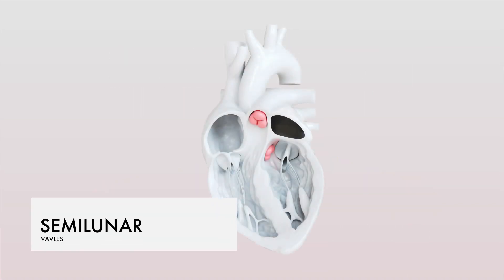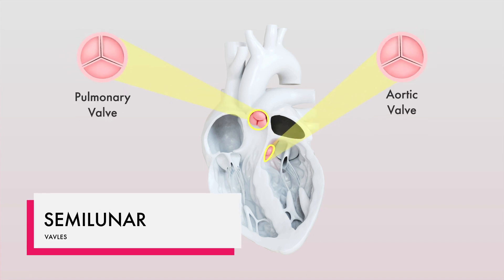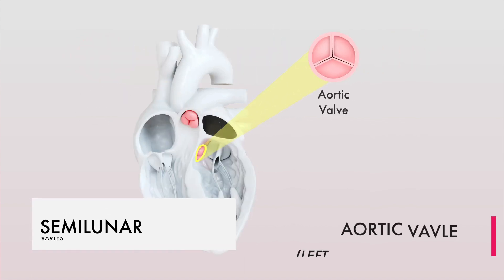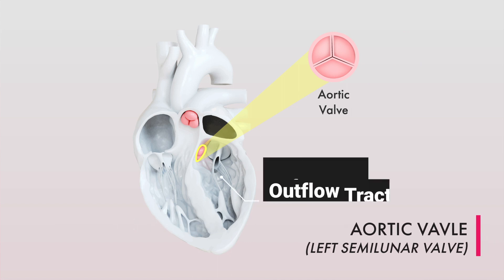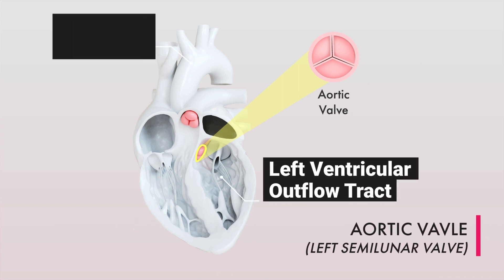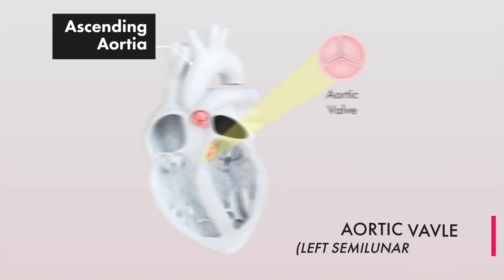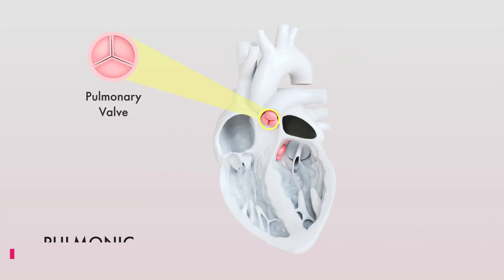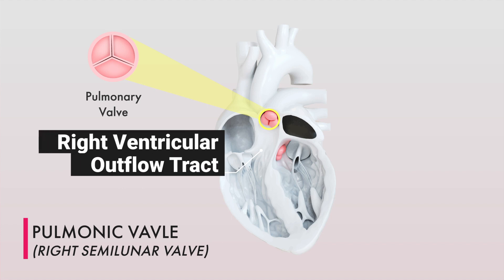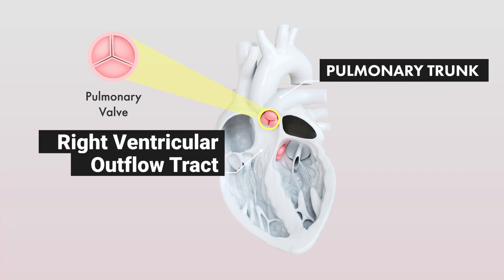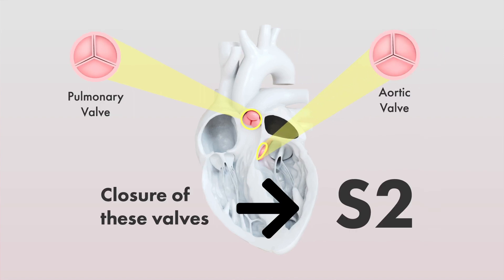The two semilunar valves are the aortic and pulmonic valves, both of which have three leaflets. The aortic valve, also known as the left semilunar valve, separates the left ventricular outflow tract from the ascending aorta. The pulmonic valve, also known as the right semilunar valve, separates the right ventricular outflow tract from the pulmonary trunk. Closure of these valves results in the S2 heart sound at the end of systole.